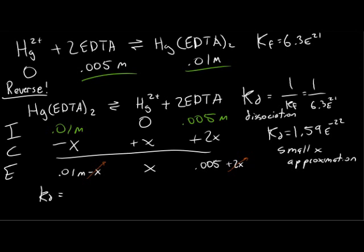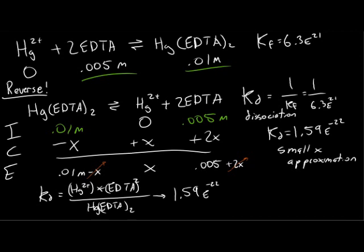Our Kd will equal the Hg2+, multiplied by the EDTA, squared, divided by the complex. Therefore, when we write our equation, we will have the Kd value, which is 1.59, times 10 to the negative 22nd, is equal to my Hg, which I don't know, it's still x, times the EDTA, squared, which will be 0.005, squared, divided by my complex, which is 0.01.